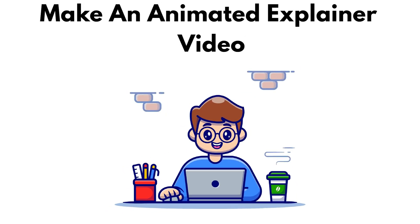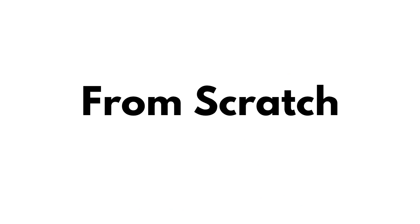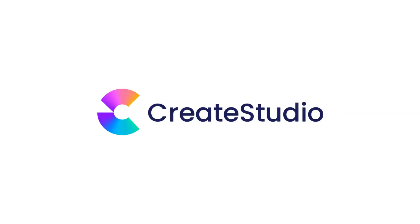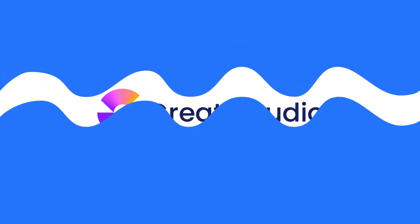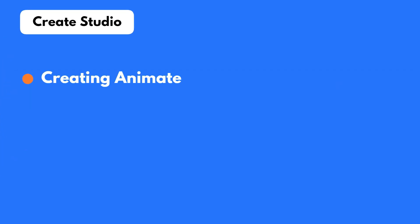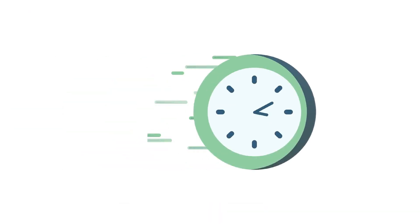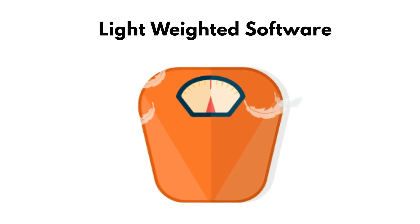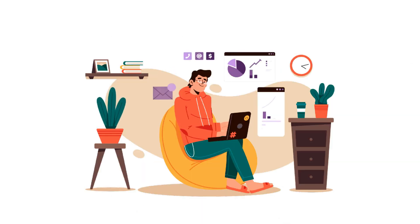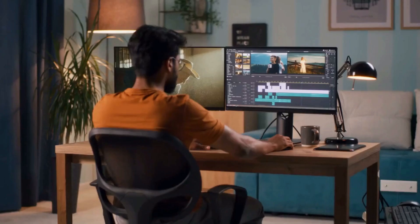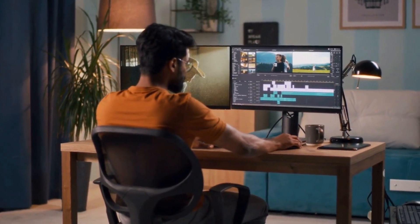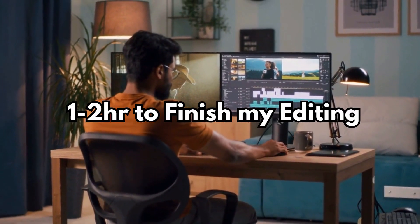In today's video we are going to make a professional looking, highly engageable animated explainer video from scratch using a software called CreaStudio. CreaStudio is an awesome software for creating animated explainer videos professionally without taking much effort and time. It's a lightweight software, so you don't need to worry about your computer — it works perfectly on every level of machine. I used this software to edit this entire video and it took me around one to two hours to finish.